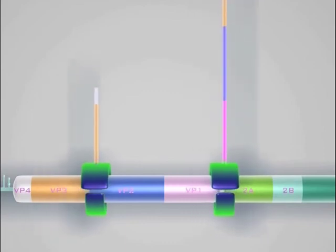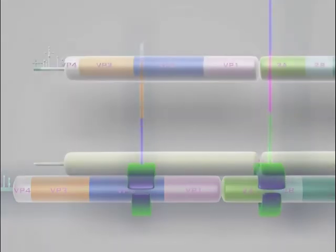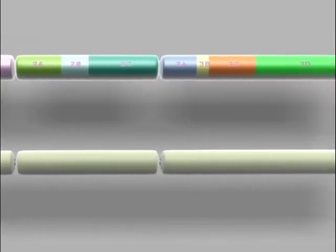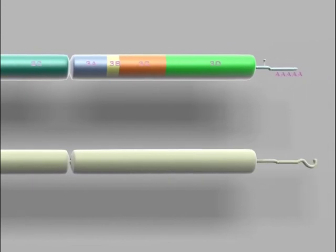It's believed that the switch from translation to minus-strand RNA synthesis occurs when a critical concentration of viral translation products accumulates in the infected cell. Let's see what happens.